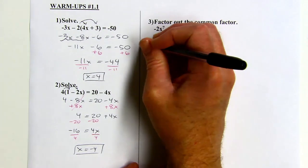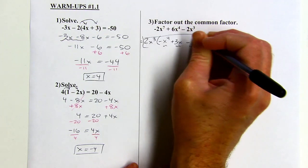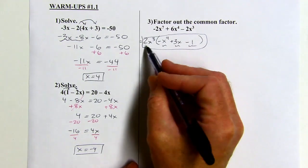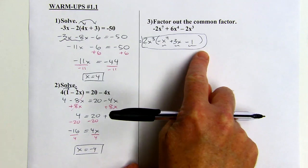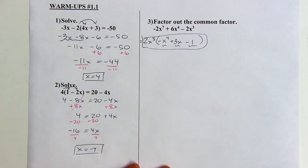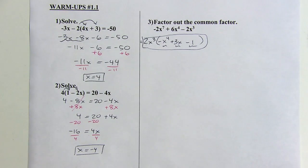Okay, and this is finished, and it's true, you could also have factored out negative 2x to the third. You could have brought the negative out with the common factor, and then everything would be the opposite sign. That would work, too. Okay, that's it for this warm-up. See you next time.